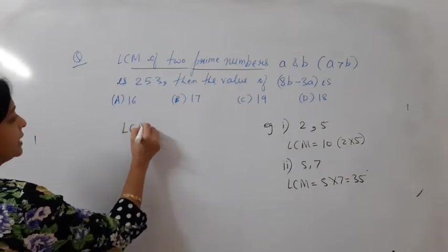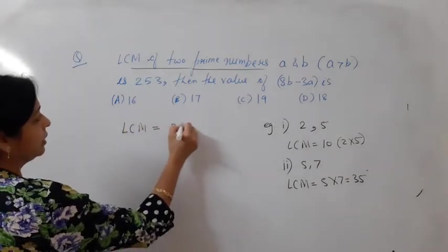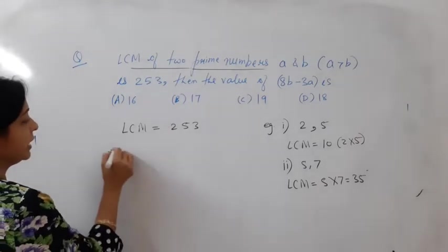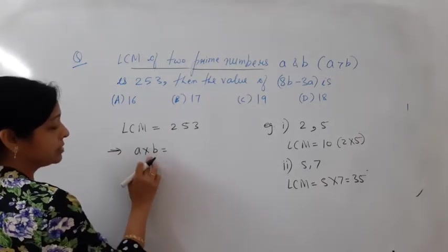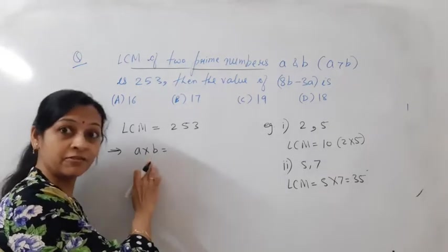So let us write. LCM is given to you as 253 and the numbers are A and B. So LCM is same as the product of numbers if the numbers are prime.